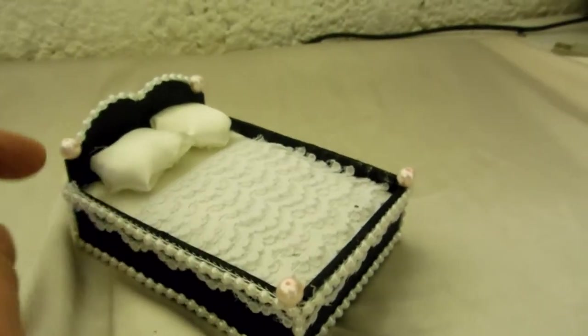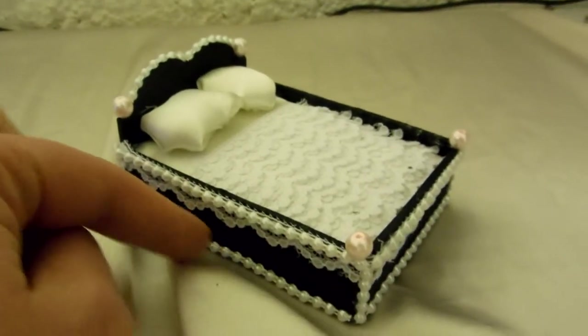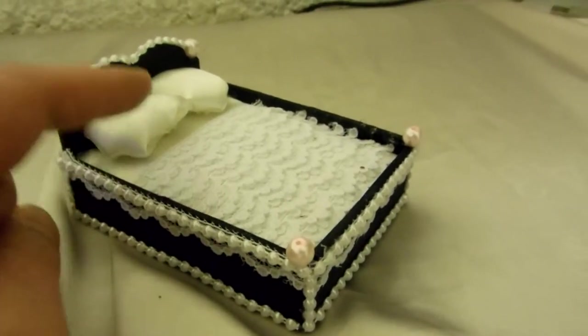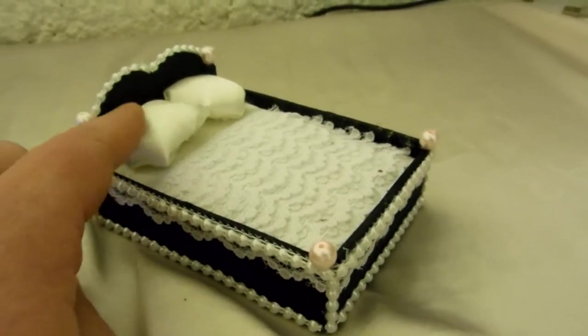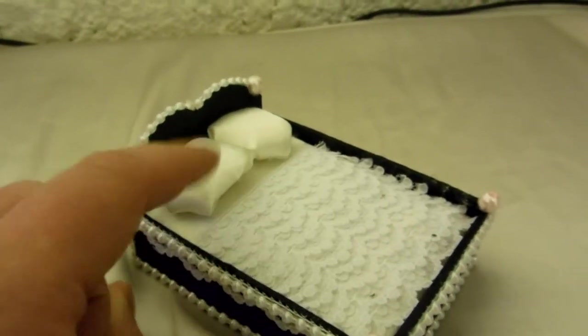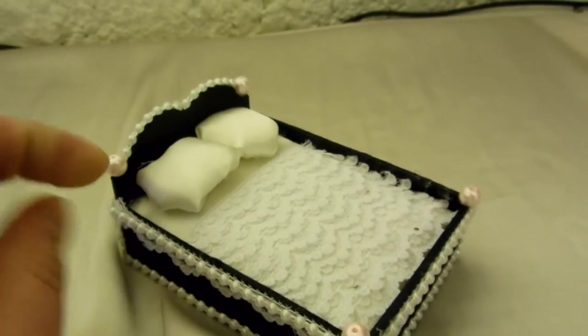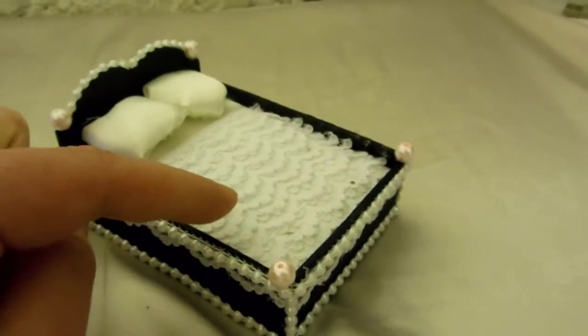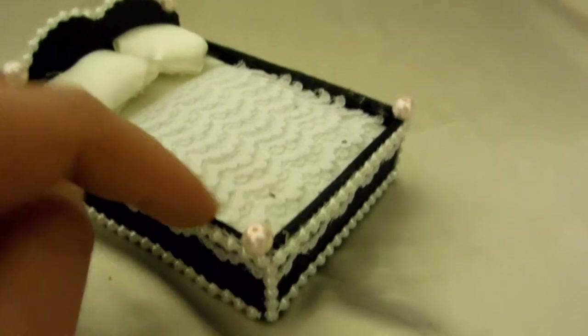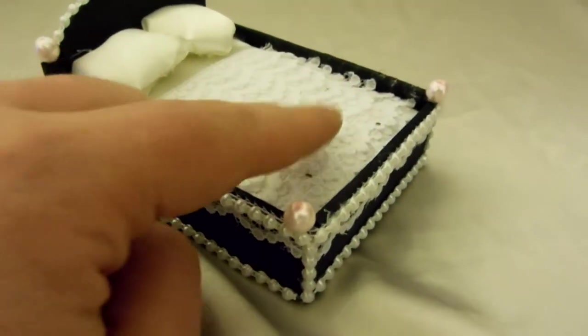I glued it down, made the frame of the bed, painted it, and glued it together. Once everything was good, I made these little pillows with the same stuffing and glued them down at the bottom. To make the bedspread, I layered strips of lace.